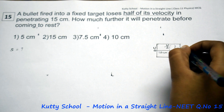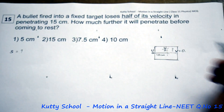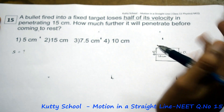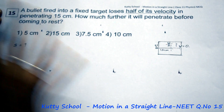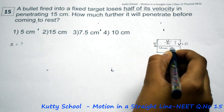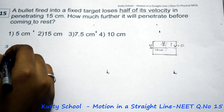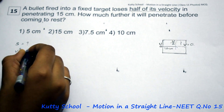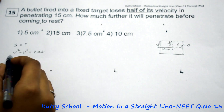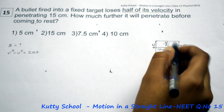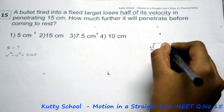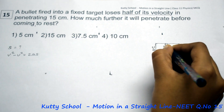The final velocity is equal to zero when it comes to rest. Now we have to write in the distance using the formula: v squared minus u squared is equal to 2as. Here, v square is the final velocity. In the first 15 cm, the final velocity is u by 2.